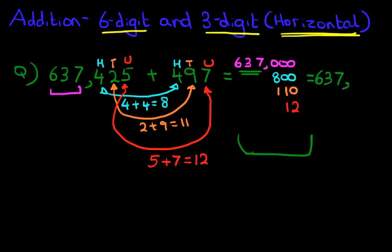637,000. How many hundreds have we got? Well, we've got eight hundreds and one more. Eight plus one is nine.